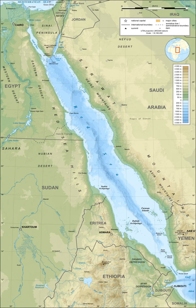The sea is the habitat of over 1,000 invertebrate species and 200 soft and hard corals. It is the world's northernmost tropical sea.